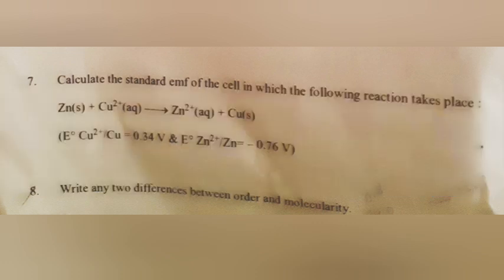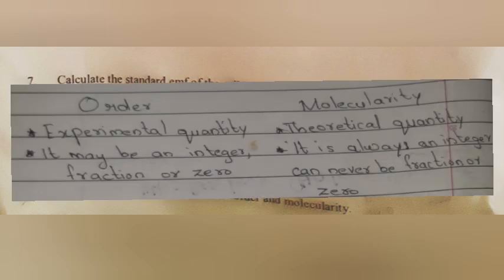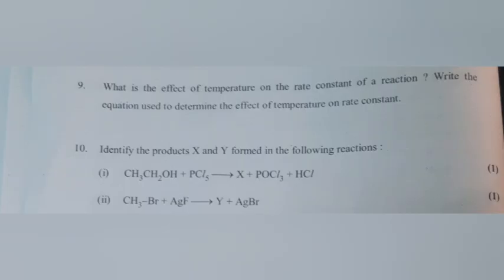Question 8: Write any two differences between order and molecularity. Answer: Order is an experimental quantity; molecularity is a theoretical quantity. Order may be an integer, fraction, or zero; molecularity is always an integer and can never be a fraction or zero. Reaction order is applicable to all chemical reactions; molecularity is only applicable to simple reactions.